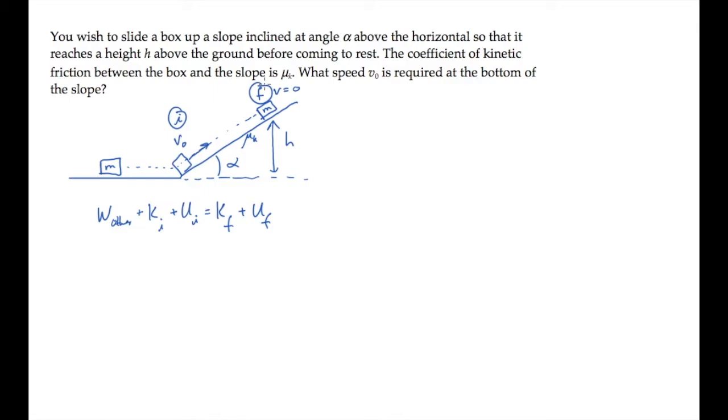In between the initial and final points, friction does work on the box, so work done by other forces is the work done by friction. The initial kinetic energy is one-half m v0 squared. If we set y equals zero on the ground, there's no initial potential energy.